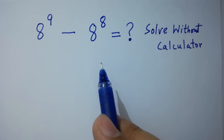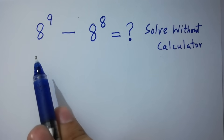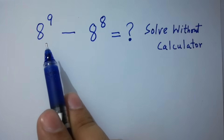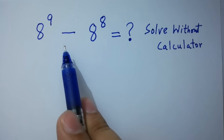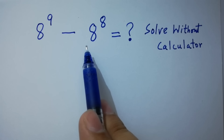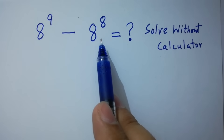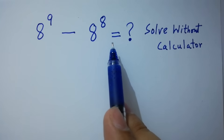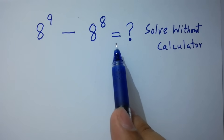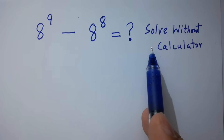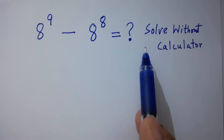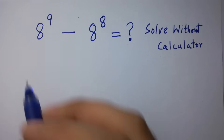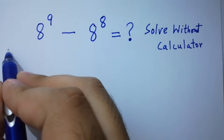Hello friends. 8 to the power 9 minus 8 to the power 8 equals what? Solve without calculator. Let's have a solution.